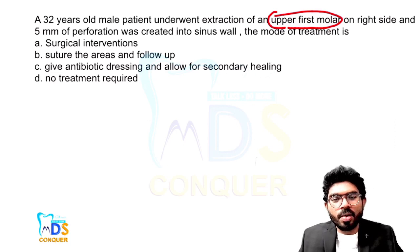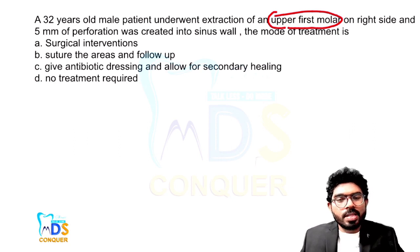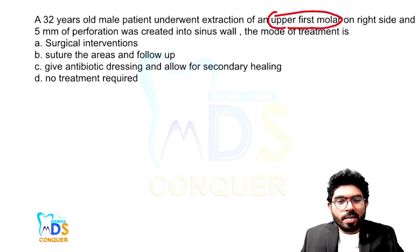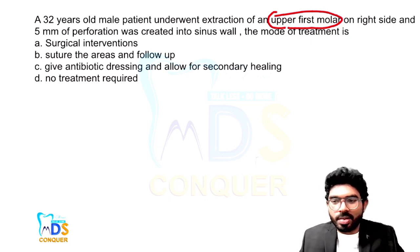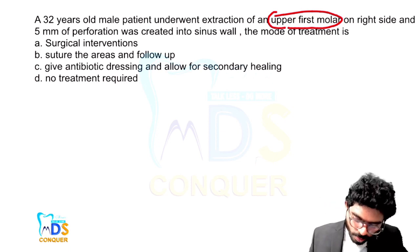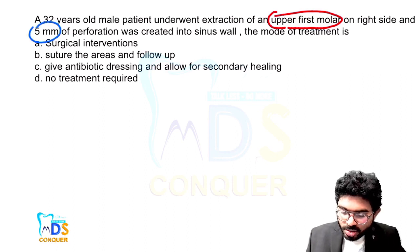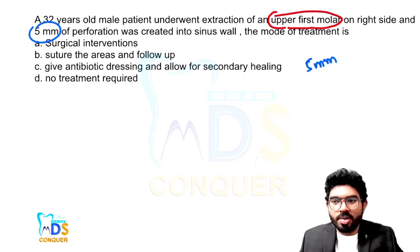We know the difference between acute and chronic oroantral communication. Whether to go with a surgical option or a regular follow-up depends on the size. Option A is surgical intervention, option B is suturing the area and follow-up, option C is antibiotic dressing and allowing secondary healing, and option D is no treatment. It just depends on one keyword in the question — the size of the perforation. Here the size given is 5 millimeters.